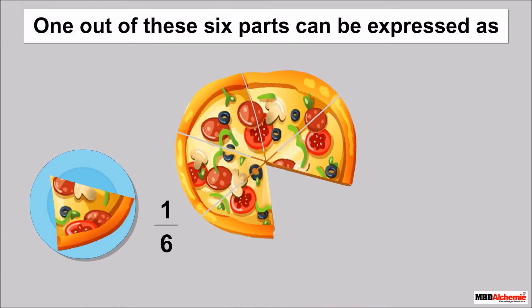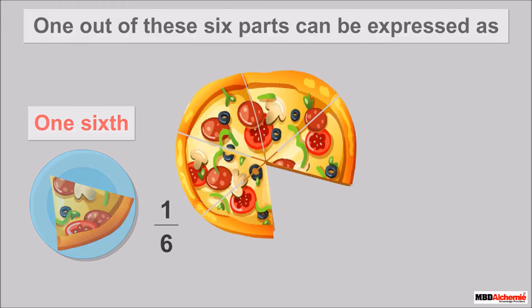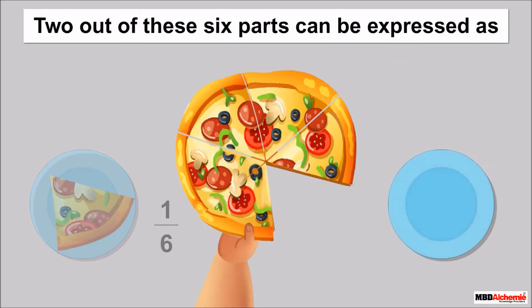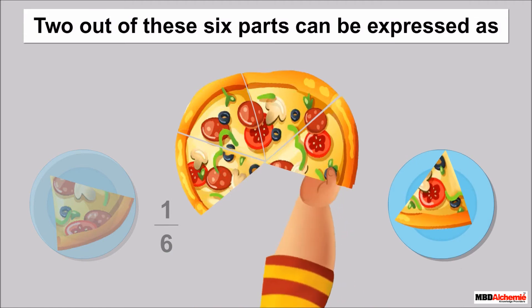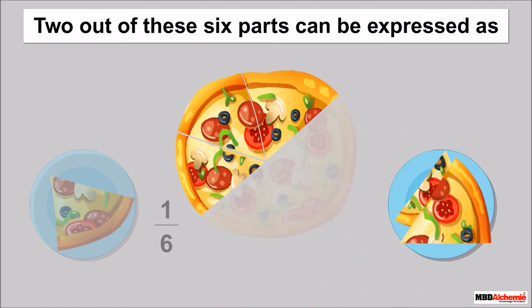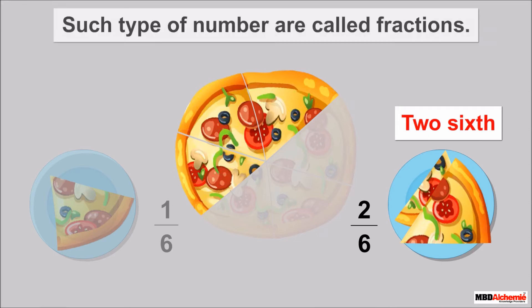1 out of these 6 parts can be expressed as this. This can be read as 1 sixth. 2 out of 6 parts can be expressed as this. This can be read as 2 sixths. Such types of numbers are called fractions.